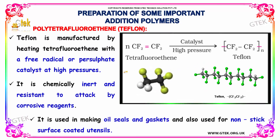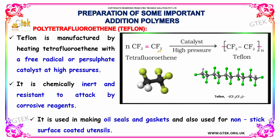Teflon is generally manufactured by heating tetrafluoroethylene with a free radical or persulfate catalyst at high pressures. In the reaction, N units of tetrafluoroethylene under high pressure and in the presence of nickel or another suitable catalyst yields Teflon.